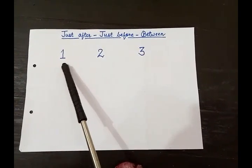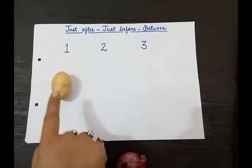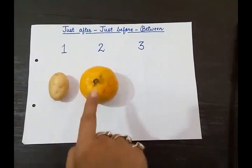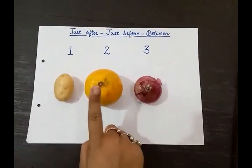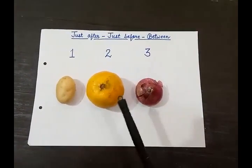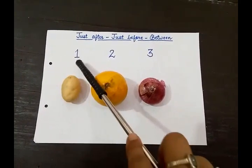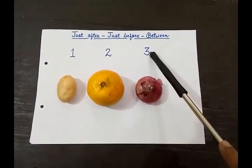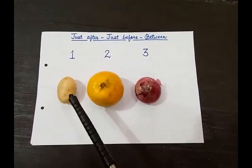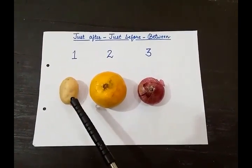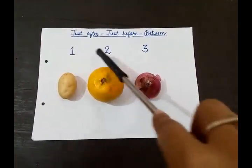This is the topic: just after, just before, between. These are the numbers 1, 2, 3. Assume that at position 1 we are keeping 1 potato, at 2nd place we are keeping 1 orange, and at 3rd place we are keeping 1 onion. Orange is at number 2. Potato is at number 1. Onion is at 3rd number. Potato comes before orange — 1 comes before 2.